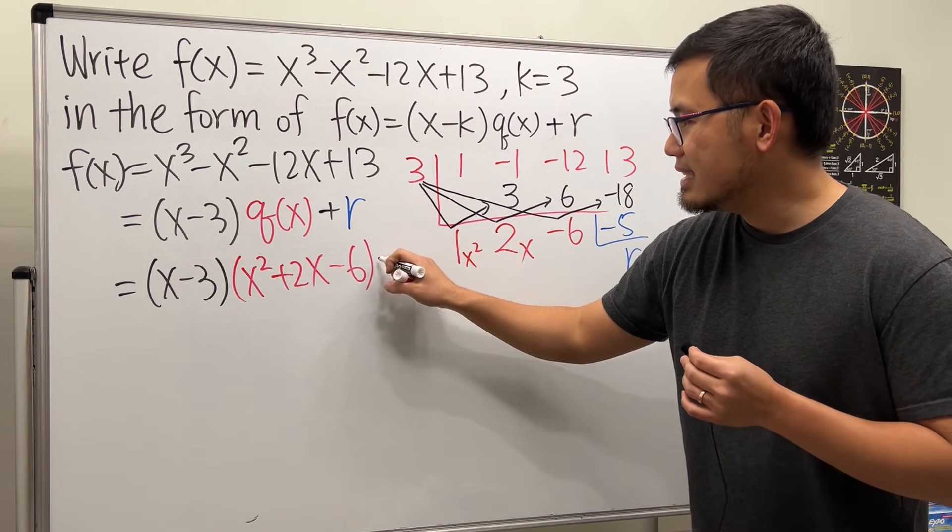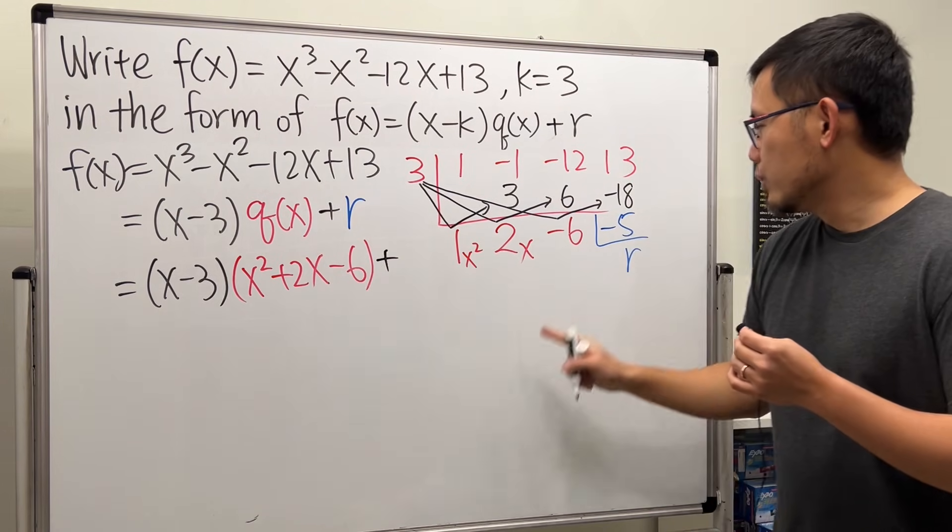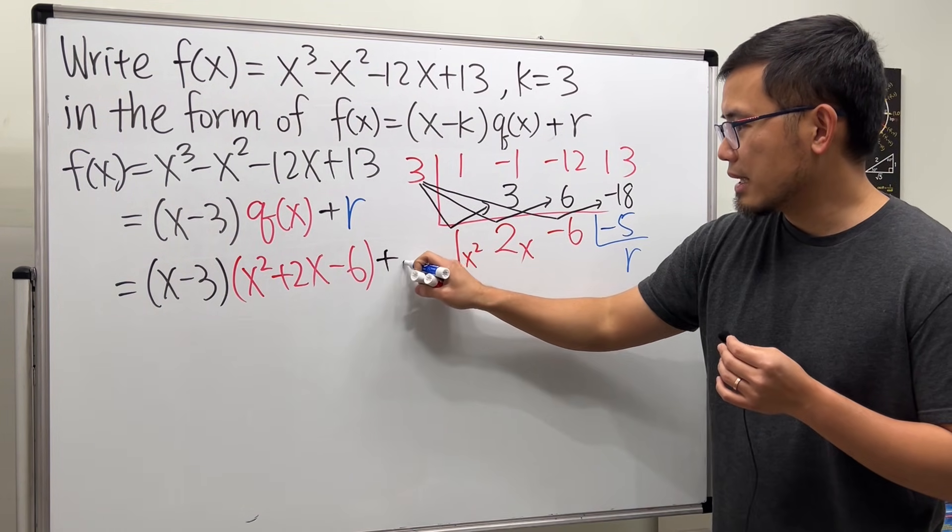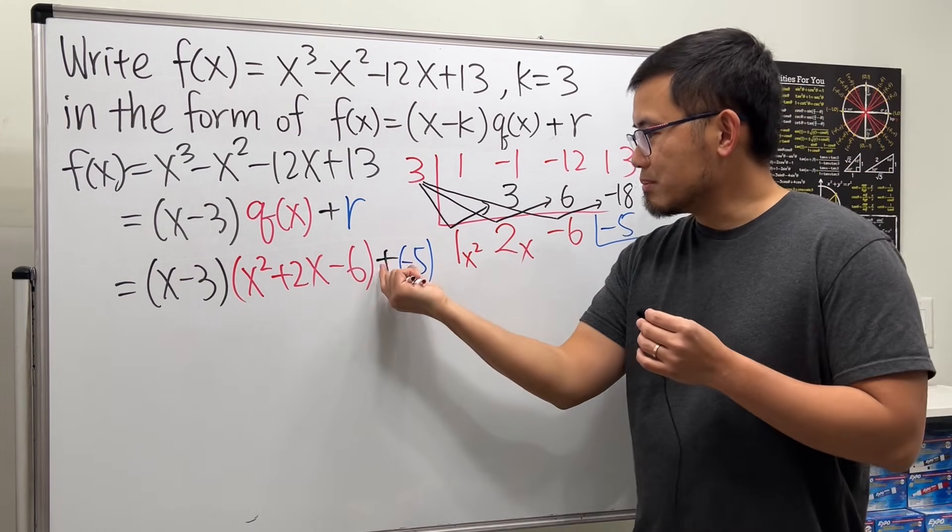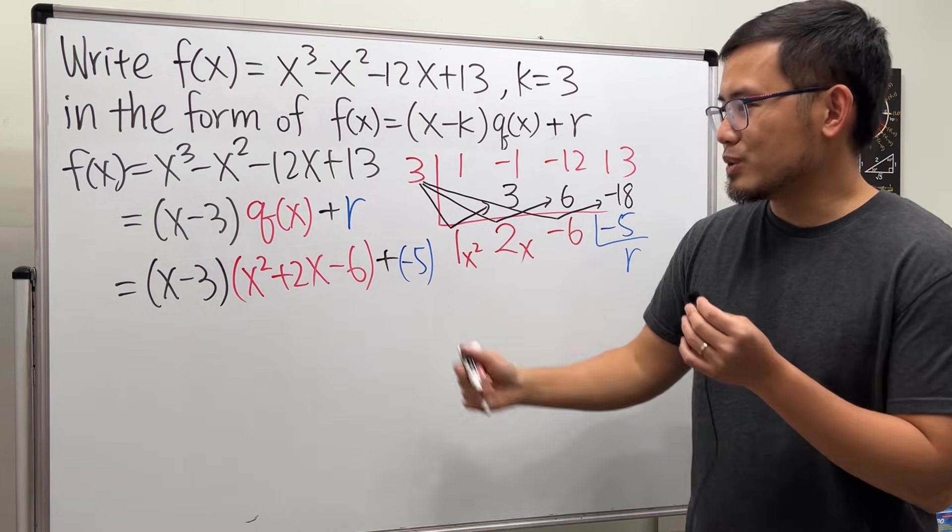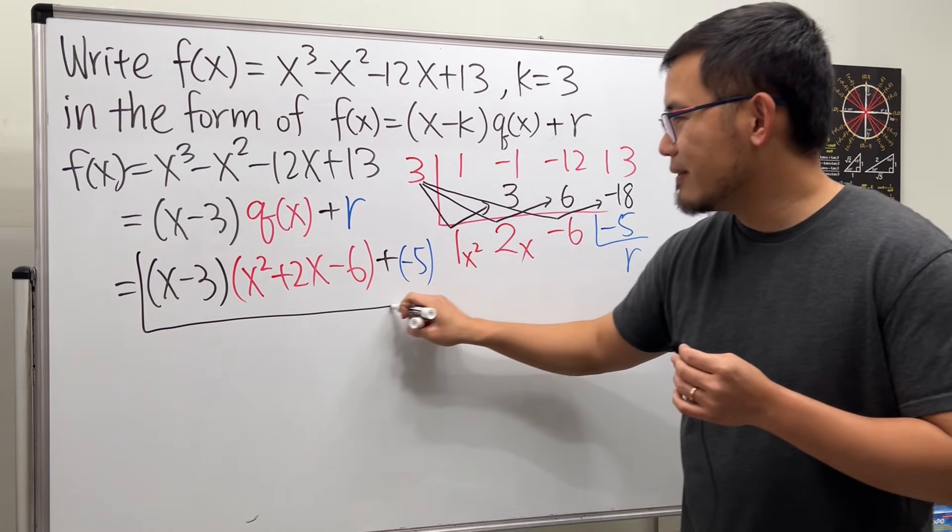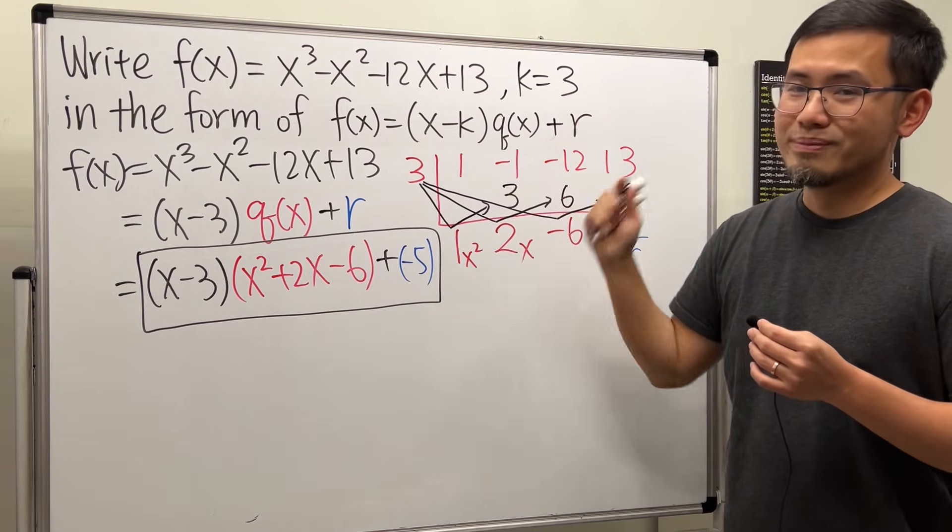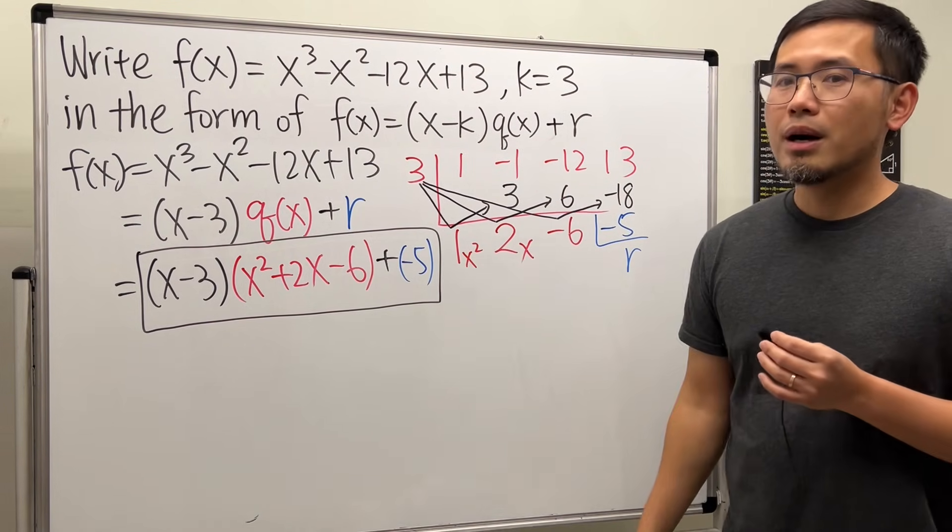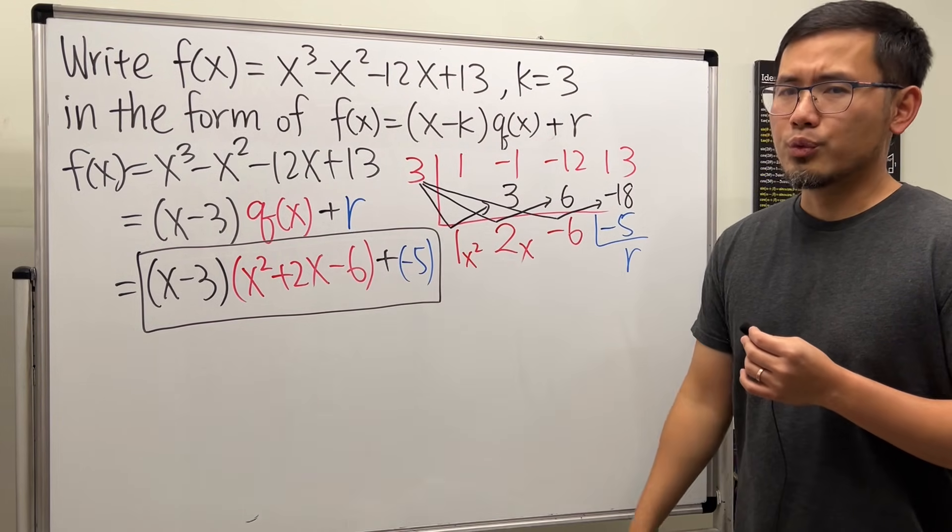Then we add the remainder, which is negative 5. So I'm just going to put down plus negative 5 like this. Of course, you can also write it as minus 5, right? Work that out, but I will just leave it like that. And there you have it. This right here is the function in this form.